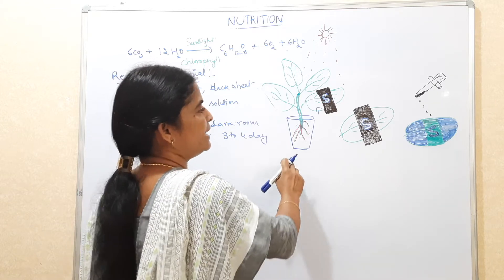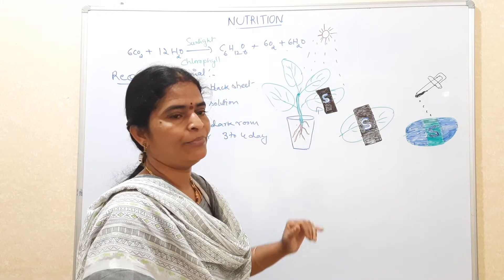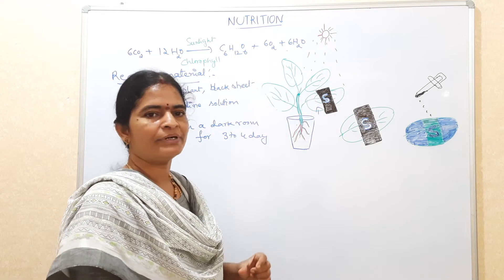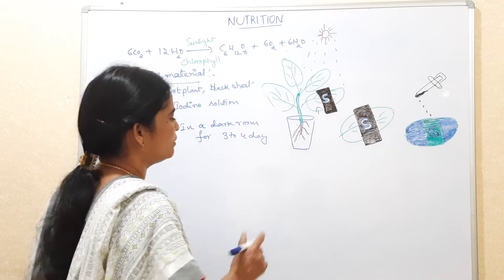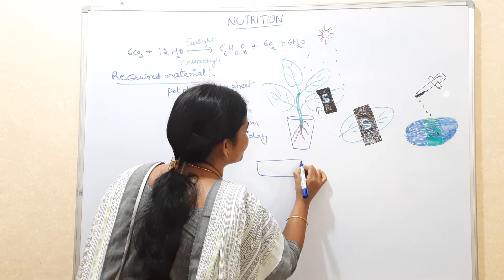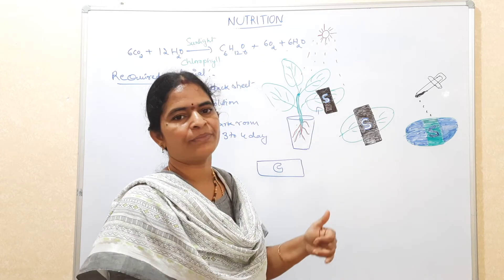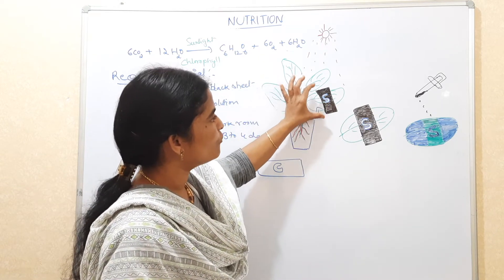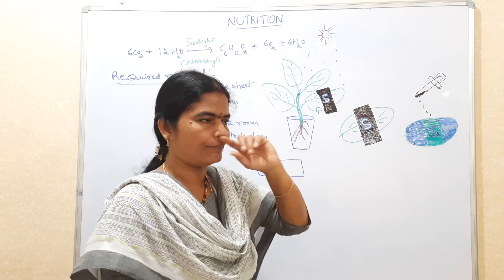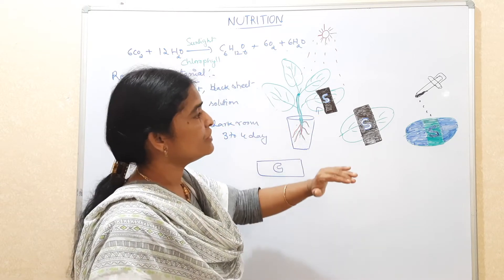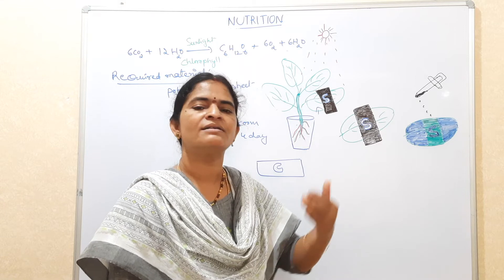After four days, take out the pot plant and keep it under sunlight. While doing so, take a black sheet of paper and cut a shape — like an S or C shape, or any shape you wish. Cut the black paper and paste it onto the leaf that we are going to keep under sunlight. Keep it under sunlight for 3 to 4 hours, sometimes up to 6 hours depending on the intensity of sunlight.